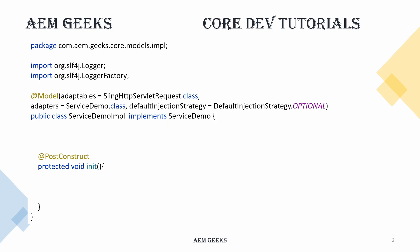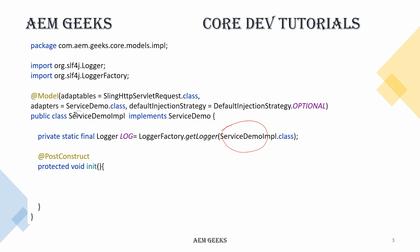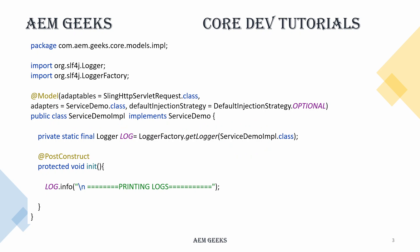First of all, you have to import the SLF4J Logger. This is not specific to AEM — you can use this API in any Java application, but this is how we use it in AEM. Once you have imported it, you have to get a Logger from the LoggerFactory. This object takes the name of your class. Once you have this, you can print your logs using this Logger object.